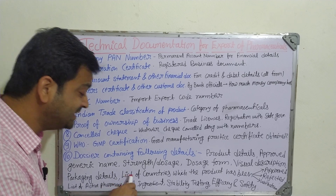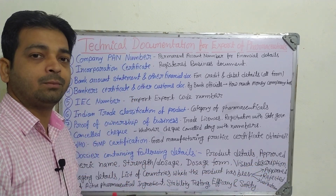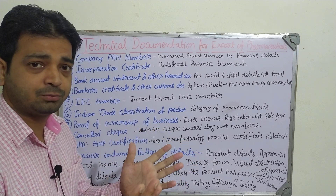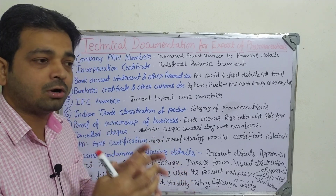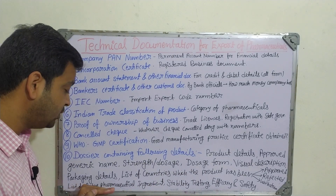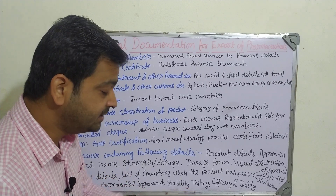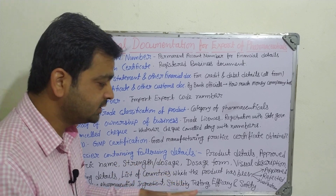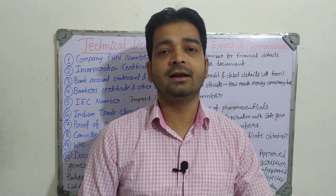The dossier must also include a list of countries where the product has been approved, rejected, or withdrawn, because a pharmaceutical company may be approved in Australia, UK, Canada, Singapore, Malaysia, or rejected for various reasons, or the approval may expire after a certain period. Additionally, the list of active pharmaceutical ingredients, stability testing — physical, chemical, and biological — the methods used, and the efficacy and safety parameters of the pharmaceutical product must all be revealed.